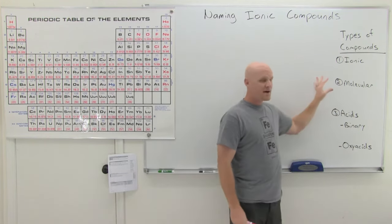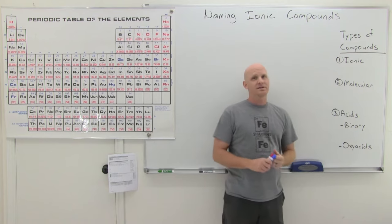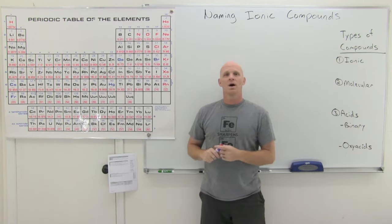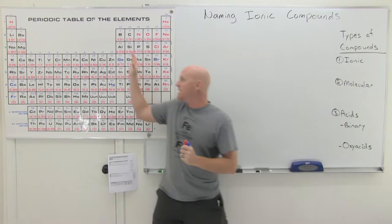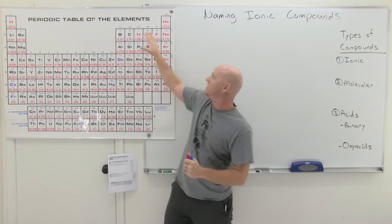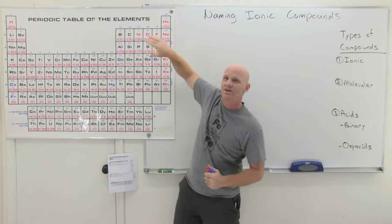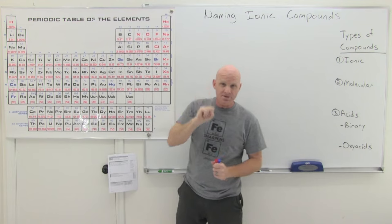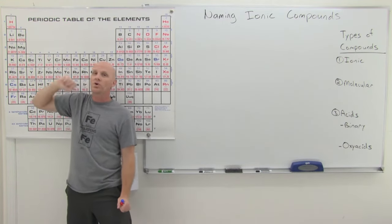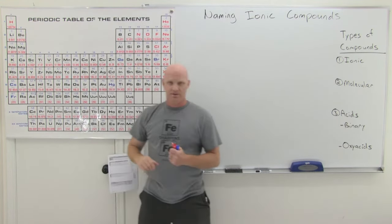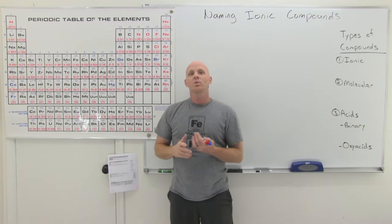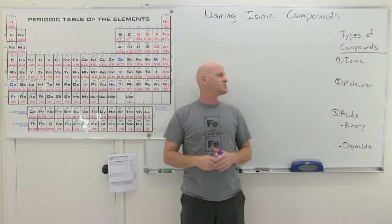We need to talk about types of compounds. In the last lesson we introduced the periodic table and the big division between metals on the left-hand side of the table and non-metals on the right-hand side. Note that hydrogen over here is also a non-metal. That distinction is going to be the key to understanding what kind of compound you have.